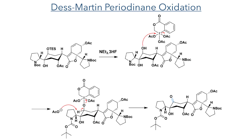The synthesis proceeded with the deprotection of the secondary alcohol using HF and oxidation using Dess-Martin periodinane. This reaction involves the nucleophilic attack of the hydroxyl group on the hypervalent iodine centre. The deprotonation of the hydrogen geminal to the oxygen forms a carbon-oxygen double bond and reduces the iodine, which acts as an electron sink and completes the desired transformation.